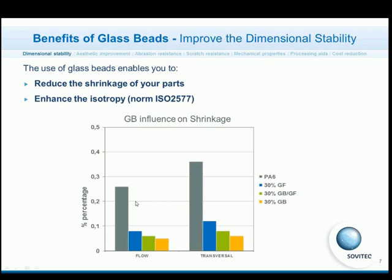You can compare on the graph the values of a neat polyamide, polyamide with 30% glass fibers, polyamide with a blend of glass fibers and glass beads, and finally polyamide with only glass beads. You can see that we decrease the problem of shrinkage in automotive compounds by using glass beads, and even the blend of glass beads and glass fibers is improving it.